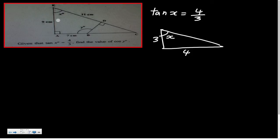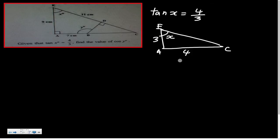The actual length from E to A is 9 cm. So let's say this is E, this is A, and this is C. Since the ratio is 3:4:5 and the adjacent side is 9 cm, we know that 3 becomes 9 cm, so 4 becomes 12 cm. With a 90-degree angle, the hypotenuse is 15 cm.